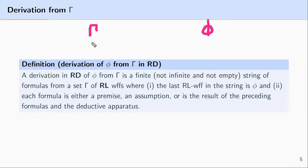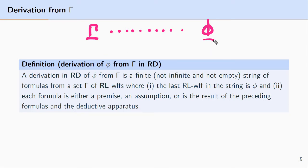This is a sequence of formulas beginning with gamma, where each step in this series is a predicate logic well-formed formula, and this series ends in a formula phi. But this series has certain constraints on it. The first constraint is that we begin the series with this set of formulas gamma.